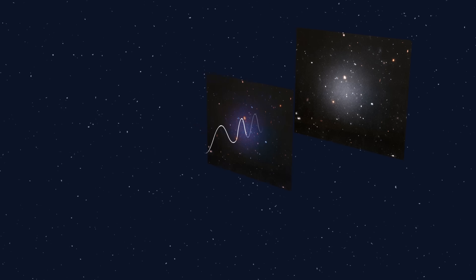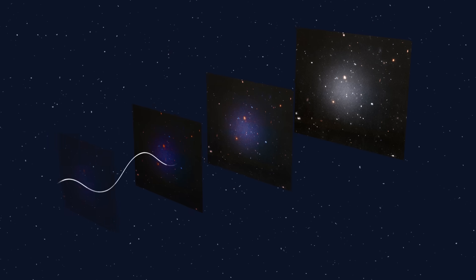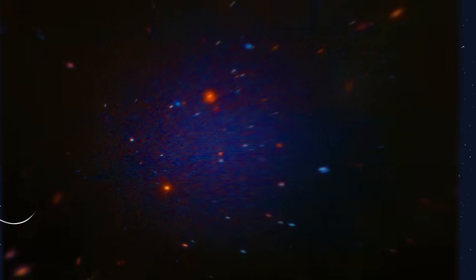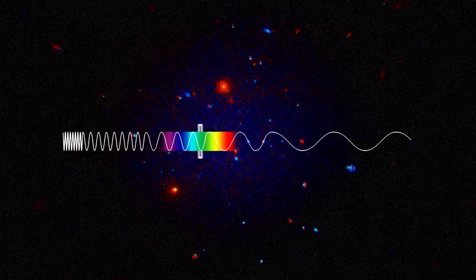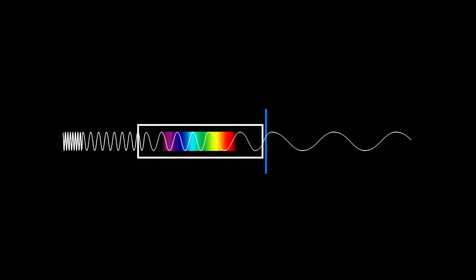As the distance to an object increases, the longer its light will spend traveling through space, and the more redshifted it will get. If the light is redshifted too much, it could be stretched to a wavelength outside of Hubble's viewing range.